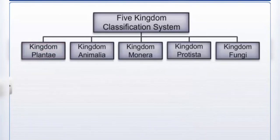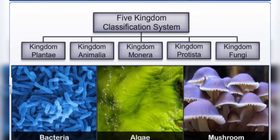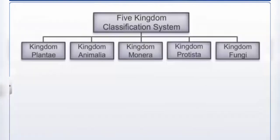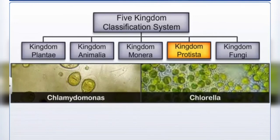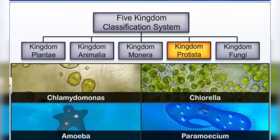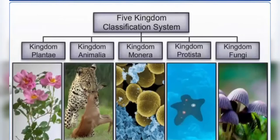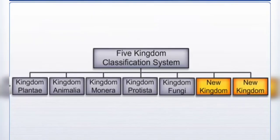The five-kingdom classification system not only classified organisms into different groups, but also brought together organisms that were earlier placed in different groups. For example, Kingdom Protista brought Chlamydomonas and Chlorella together with other eukaryotes like Amoeba and Paramecium, which were initially placed in Kingdom Animalia. Therefore, the five-kingdom classification evolved with an advancement in our understanding of organism characteristics and their phylogenetic relationships, and depending on further discoveries, classification may continue to evolve in the future.